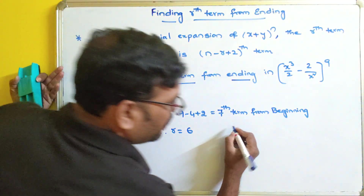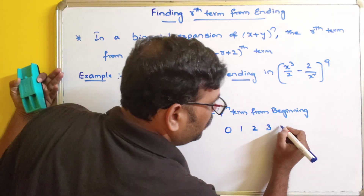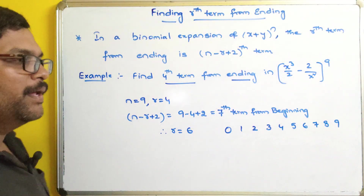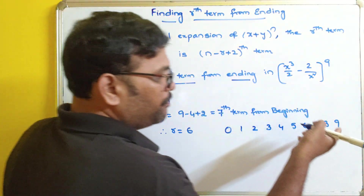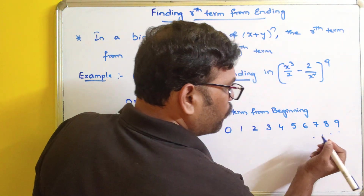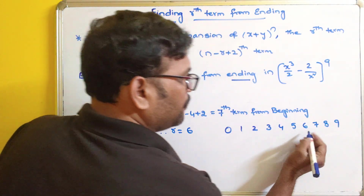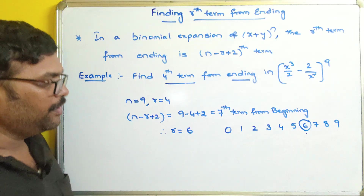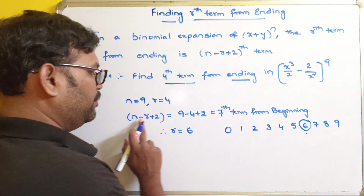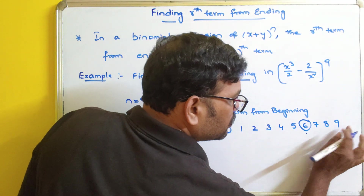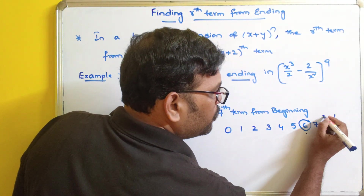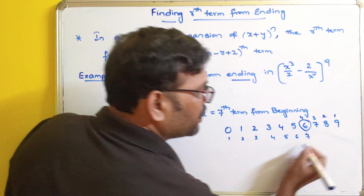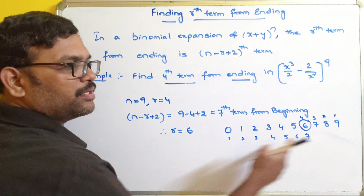Let us cross-check. I will write 0, 1, 2, 3, 4, 5, 6, 7, 8, and 9 — because n = 9. Now you can see the 4th term from the ending: counting 1, 2, 3, 4 from the end. And now see the 7th term from the beginning: counting 1, 2, 3, 4, 5, 6, 7. So the 4th term from ending is equal to the 7th term from beginning.